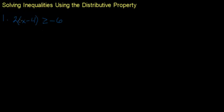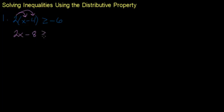We need to use the distributive property because we have this number outside of the parentheses. We are going to multiply this two times both of those terms — two times x minus two times four, which is eight — giving us two x minus eight is greater than or equal to negative six.